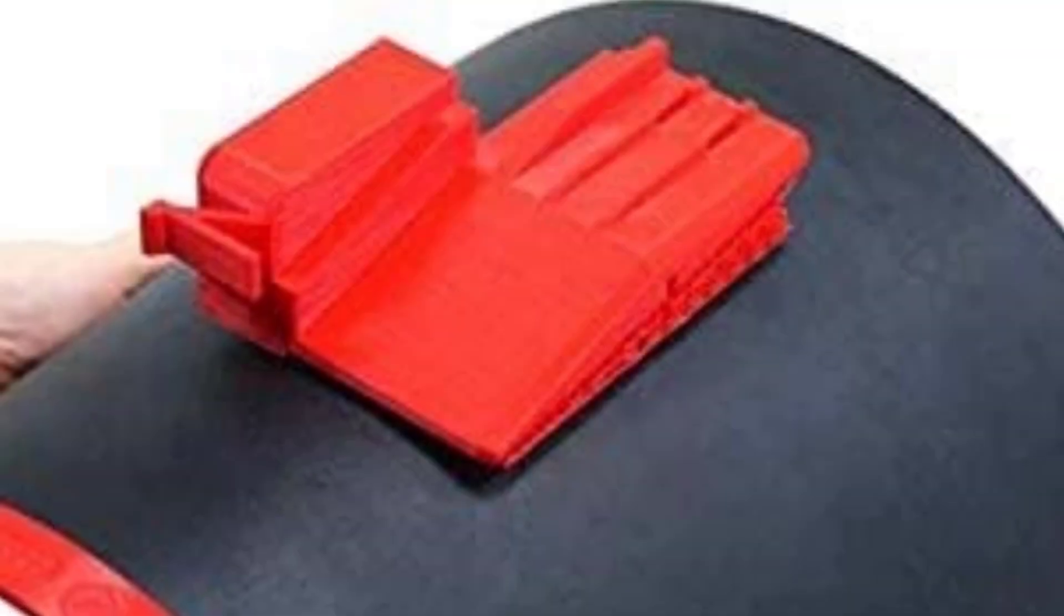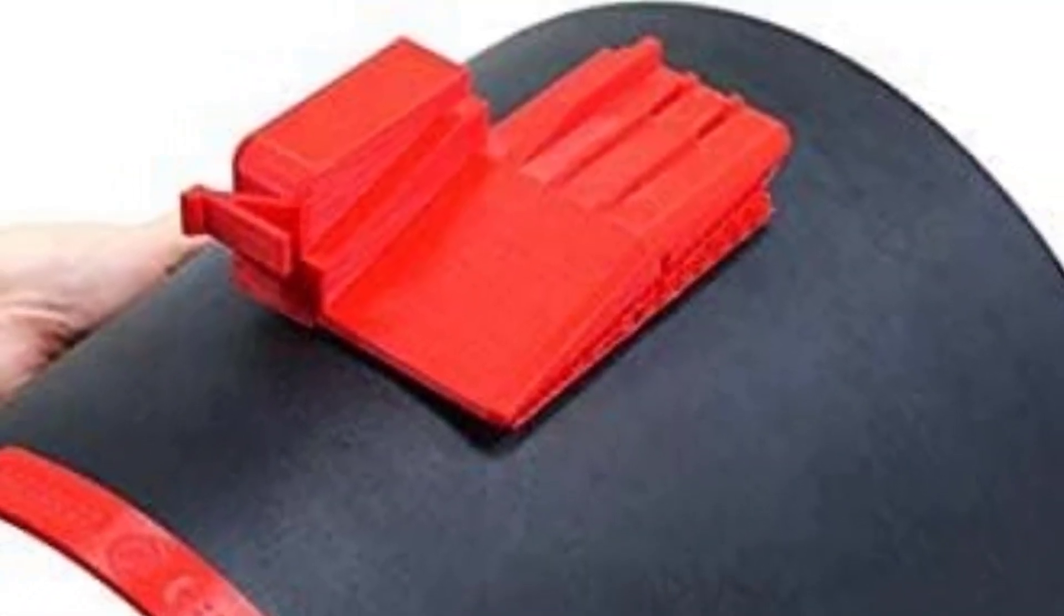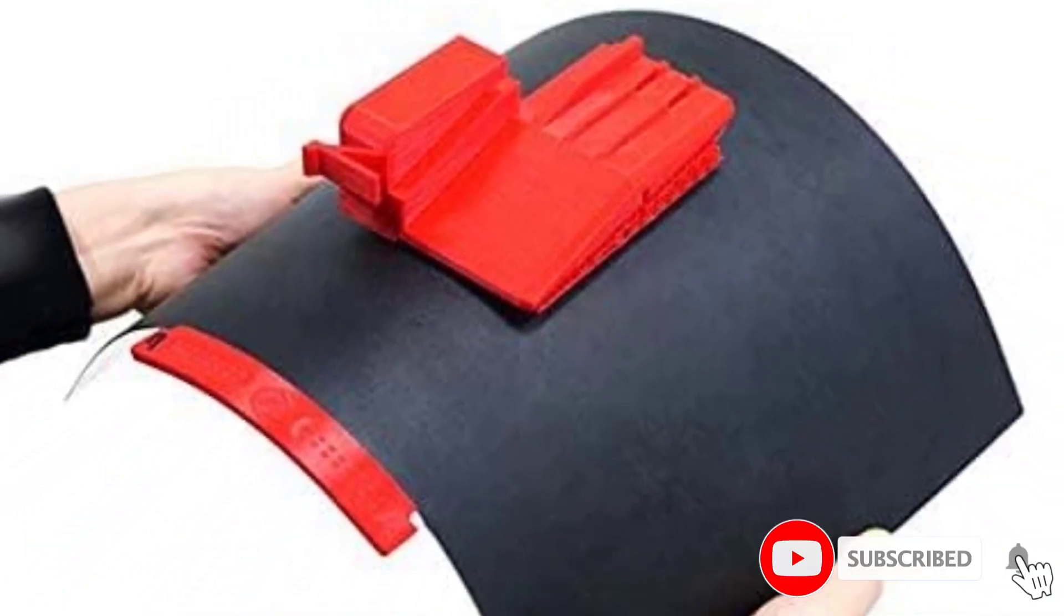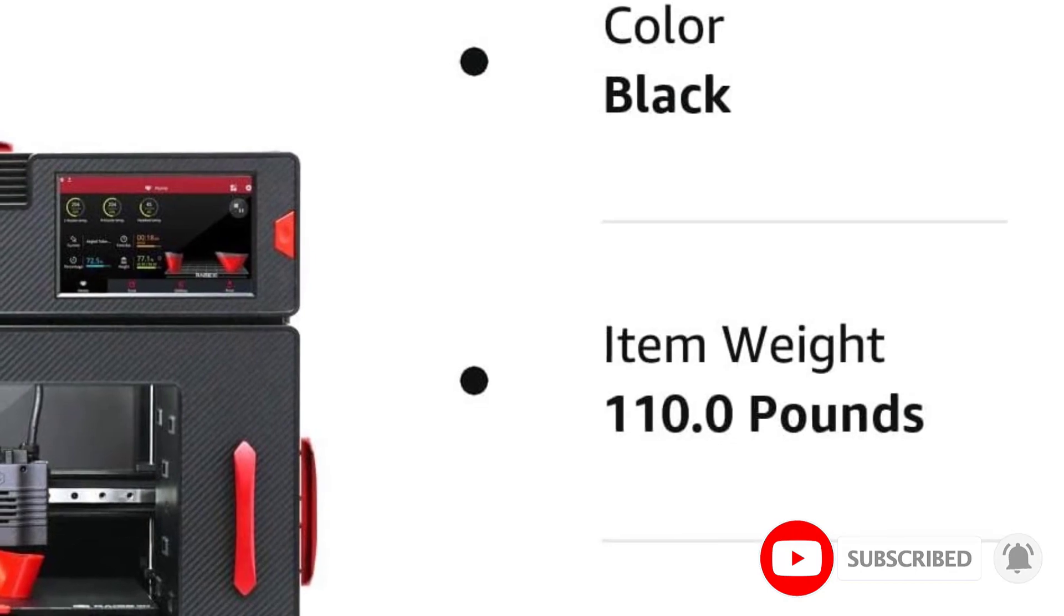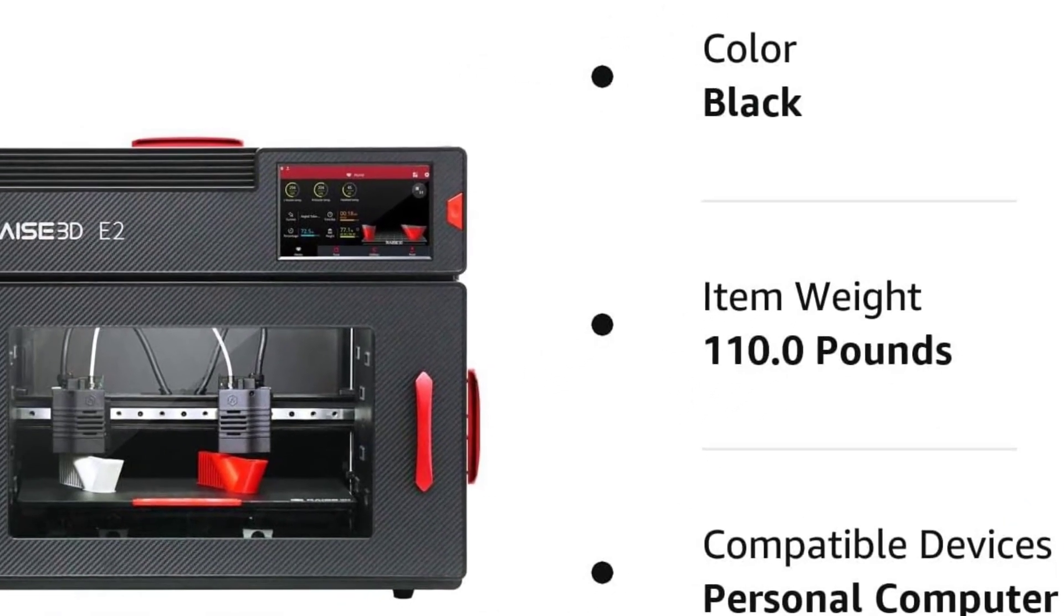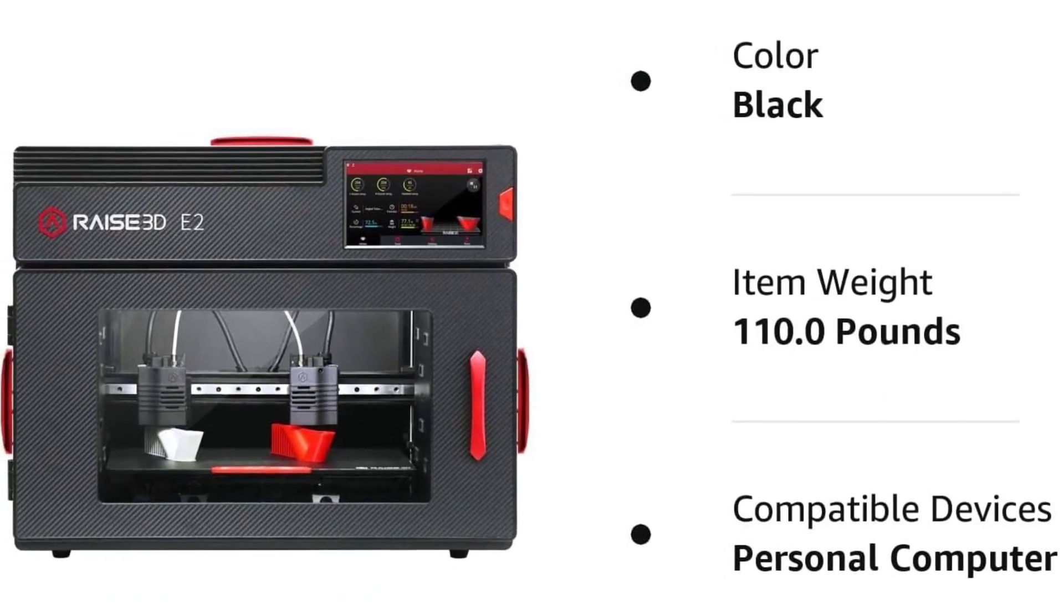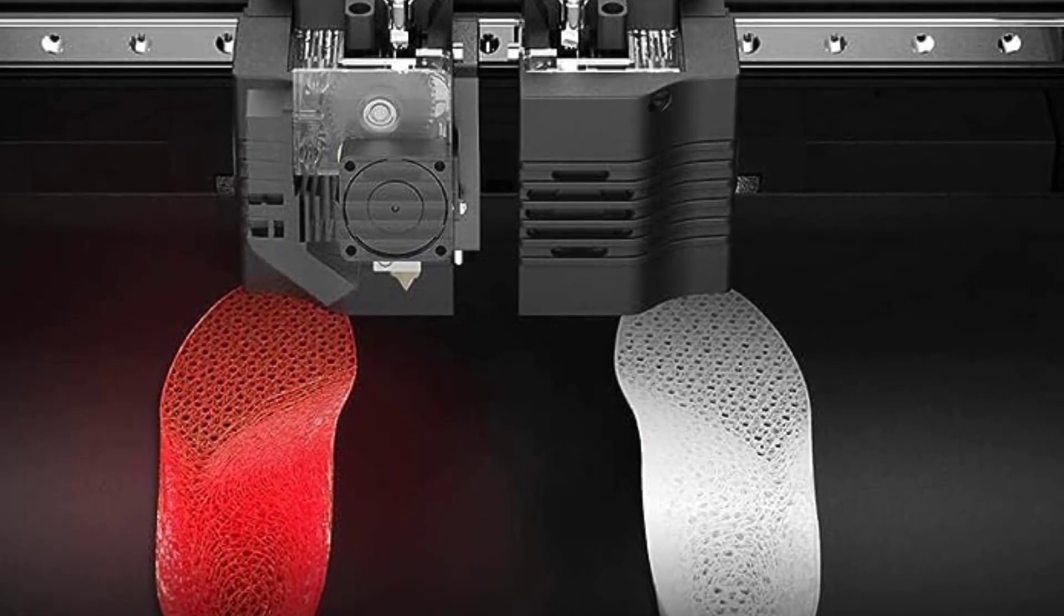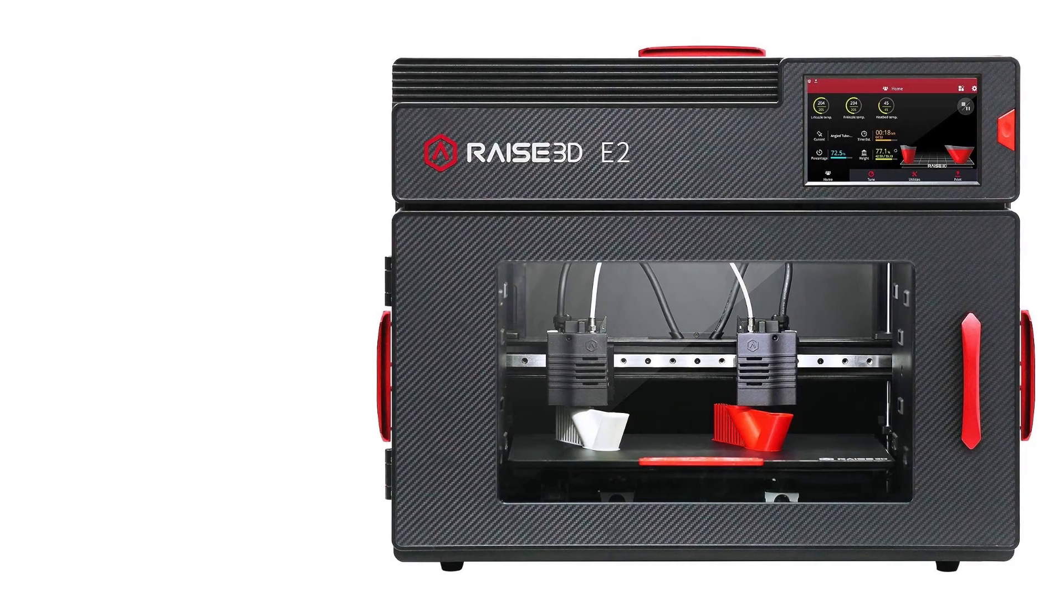It comes with two easy-swap print heads, which allow you to quickly and easily change between different filaments. The E2's intuitive touchscreen control panel makes it easy to navigate the printer's various functions. The built-in camera allows you to monitor the entire 3D printing process from start to finish. The printer's auto-bed leveling system ensures that your prints come out perfectly level every time.